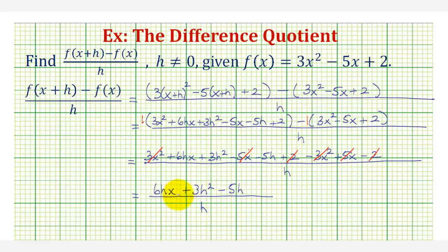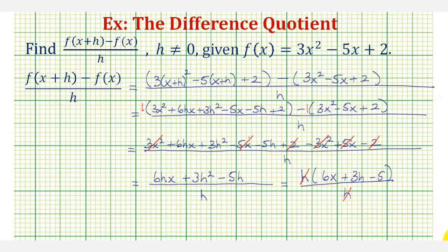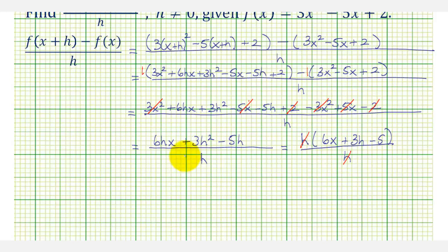But we're not done. Notice how each of the terms in the numerator contains a factor of h. So now we'll go ahead and factor the numerator to simplify. If we factor out h, we're left with six x plus three h minus five divided by h. In this form, we have h over h that simplifies to one. So the simplified difference quotient would just be six x plus three h minus five.